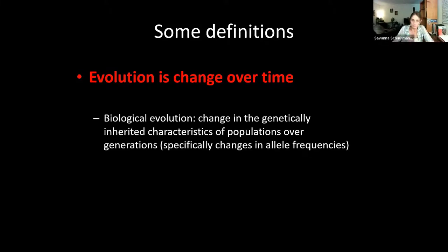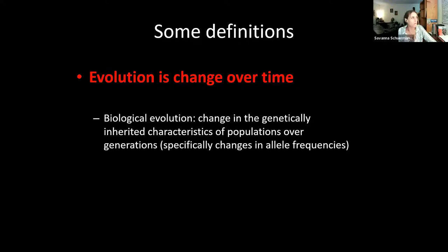In biological evolution, defined: it's a change in the genetically inherited characteristics of populations over generations — specifically changes in allele frequencies. An allele is a gene variant. You have individuals in a population with advantageous traits — maybe better claws or teeth, or they're a little faster, or a mutation has changed the color of their fur that camouflages them better in their environment. These individuals with advantageous traits survive and reproduce in higher numbers, eventually passing those traits on over generations until the whole population resembles those traits, possibly even leading to a new species over thousands, hundreds of thousands, or millions of years.